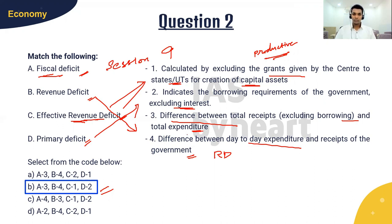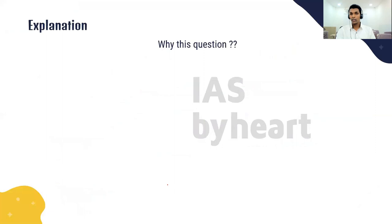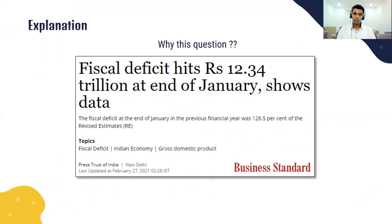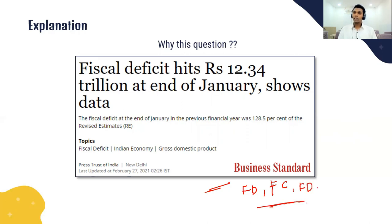You have to be thorough with the definitions of all kinds of deficits in the economy section, because time and again UPSC has asked these questions. This question was asked because fiscal deficit news often features in newspapers. In our Economic Survey and budget, we always talk about fiscal deficit, fiscal consolidation, and fiscal discipline — so know the different targets kept under the different deficits.